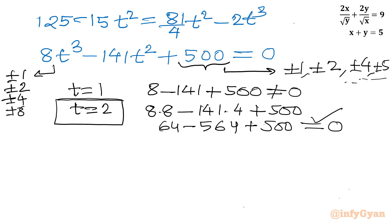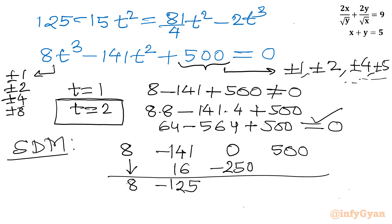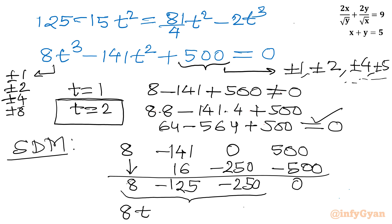Using synthetic division with root t equals 2 and coefficients 8, minus 141, 0, 500: leading coefficient is 8; 2 times 8 equals 16, giving minus 125; 2 times minus 125 gives minus 250; and the remainder is 0. The resulting quadratic equation is 8t squared minus 125t minus 250 equals 0.